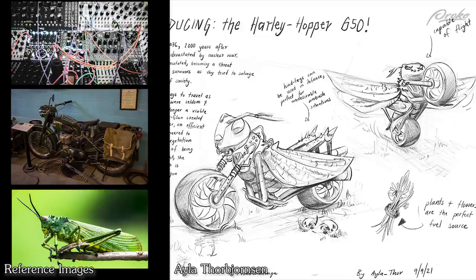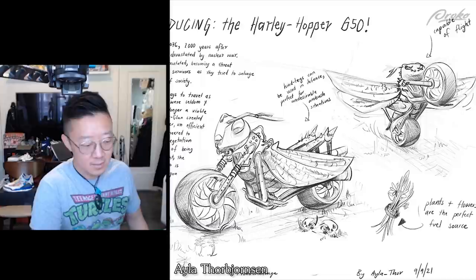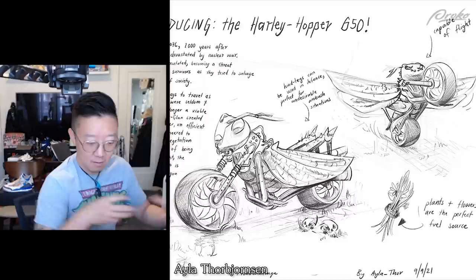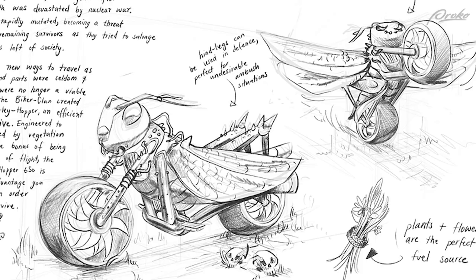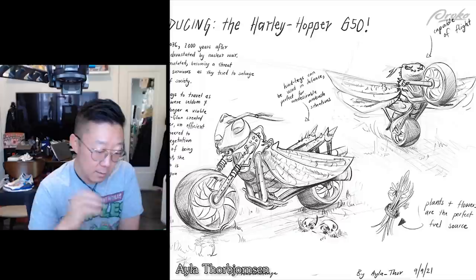Zayla — first ever Harley Hopper 650, dystopian future, with a whole storyline. I like it — capable of flight, plants and flowers are the perfect fuel source, so it actually eats things too. It's still very machine-like with metal parts and bars, so you expect it to be a bit more symmetrical than an organic being. But you start to see exoskeleton parts, joints, and movements. The draw-through method using the underlay with a refined top layer line is a really cool touch — it brings a lot of energy and clarity to your drawing.